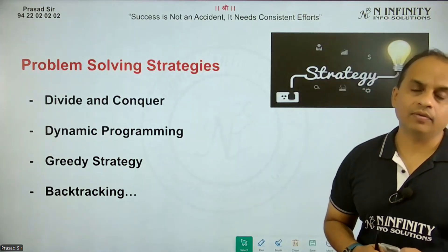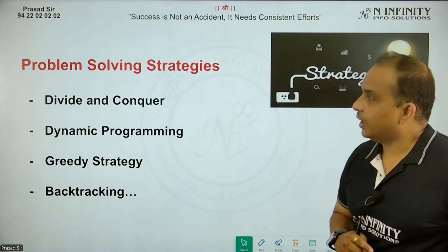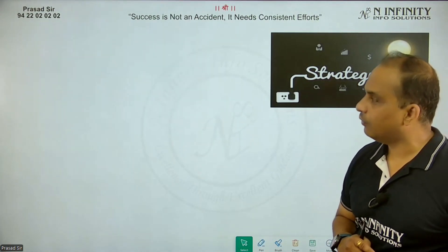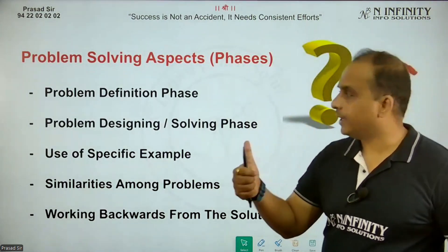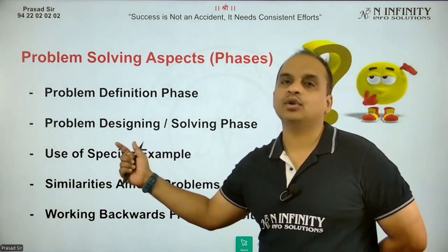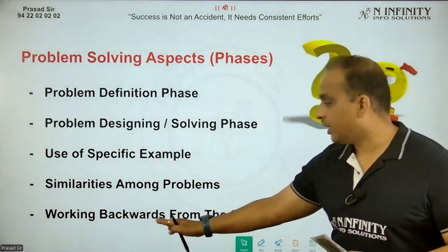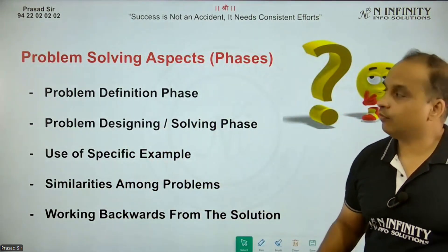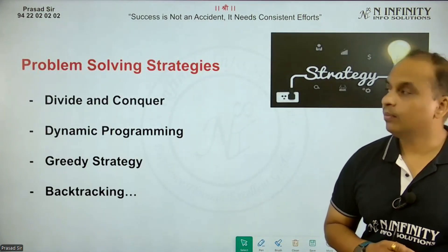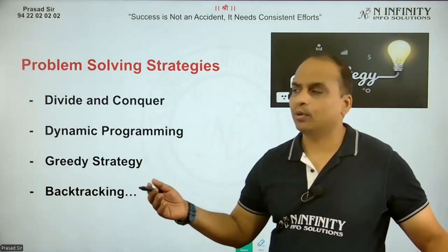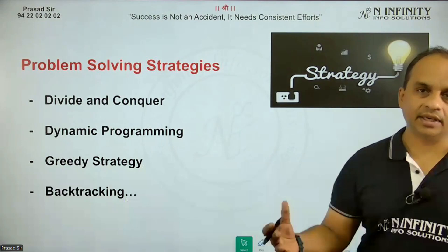So combining both the aspects and strategies: problem solving aspects include defining the problem, designing the problem, use of specific example, similarities among the problem, and working backward from the solution. Then the strategies you can adopt are divide and conquer, dynamic programming, greedy strategy, backtracking, branch and bound — there are n number of strategies. You will need to write all of these in your solution.